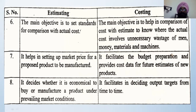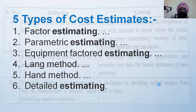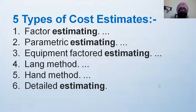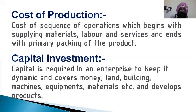Estimating decides whether it is economical to buy or manufacture a component, while costing decides output targets from time to time. The types of estimating methods include: factor estimating, parameter estimating, equipment factor estimating, length method, hand method, and detail estimating — and we will read the details in the next chapter.